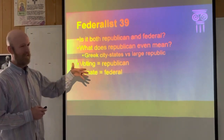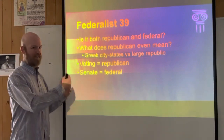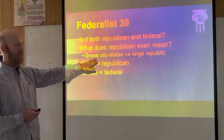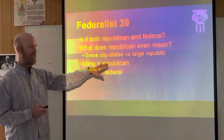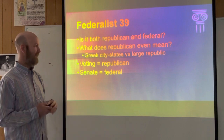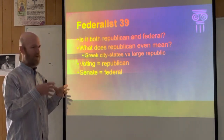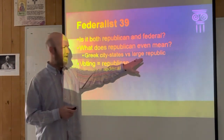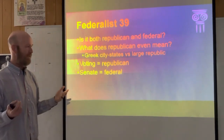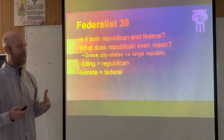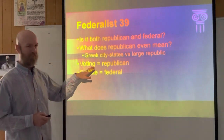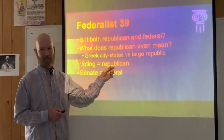A Republican system of government means that the government is made up of representatives of the people — the government represents the people. The Anti-Federalists argued that the ancient Greek city-states and the Roman Republic were the real Republican systems, and they had to be small local governments. They argued the nation would be too big to truly represent the people. So the Federalists, in writing Federalist 39, had to explain how it could be both Republican and Federalist. They said: we do vote for our representatives, so that makes it a Republican government.